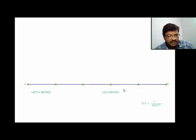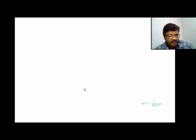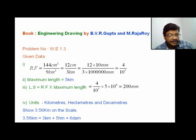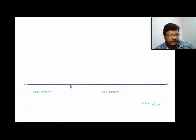Dividing the line into 5 parts with each division equal to 1 kilometer gives a maximum length of 5 kilometers. Number the divisions 0, 1, 2, 3, 4. Next, draw the height by taking 50 mm — this height of 50 mm is constant for diagonal scales. Complete the rectangle and draw vertical lines from each division point.